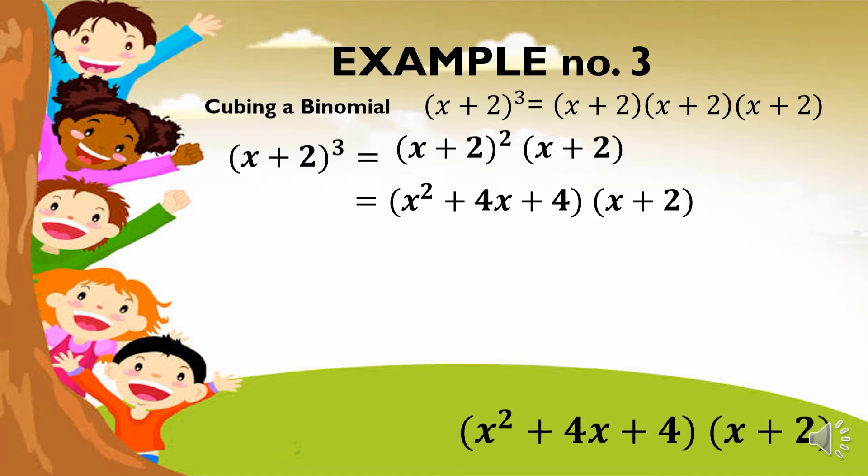x squared times x is equal to x cubed. x squared times 2 is equal to 2x squared. 4x times x is equal to 4x squared. 4x times 2 is equal to 8x. 4 times x is equal to 4x. And 4 times 2 is equal to 8.